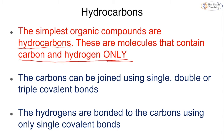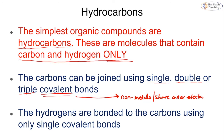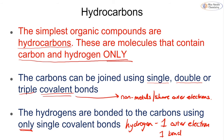The carbons and hydrogens in hydrocarbons can be bonded with single bonds, double bonds, or even triple bonds, but most importantly they are all covalent because we have non-metals sharing their outer electrons. The hydrogens are always bonded to the carbons using only single covalent bonds, because hydrogen only has one outer electron meaning it can only form one bond. So carbons can have double or triple bonds, but carbon-to-hydrogen bonds can only be single bonds.